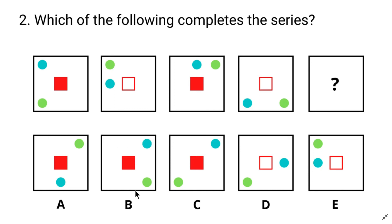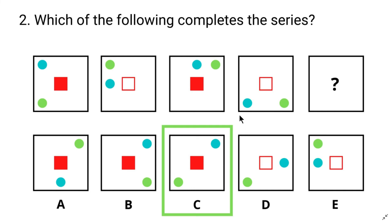Now let's pick the next shape: the green circle. If you look closely, the green circle is rotating in the clockwise direction. In the first image it's at the bottom-left corner, in the second image at the top-left corner, then top-right corner, and after that bottom-right corner. So in the next image it should be at the bottom-left corner — the answer is C. The blue circle also has a pattern, but try that yourself and post your answer in the comment section.